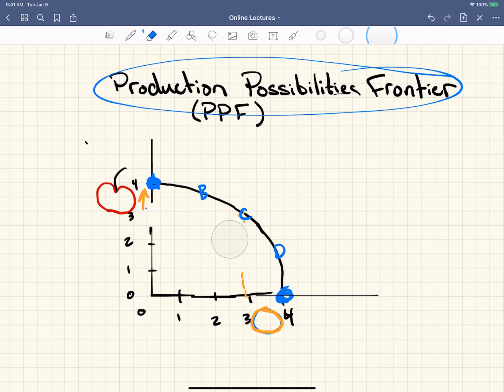What you're thinking of then is allocative efficiency. Allocative efficiency is different than production efficiency. Allocative efficiency is asking the question, are we producing what this country wants?